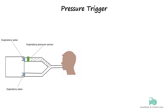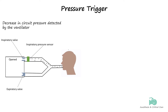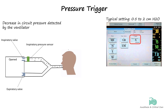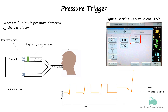Just like flow triggering, pressure triggering describes a method whereby a decrease in circuit pressure is detected by the ventilator pressure sensors and interpreted as patient effort. When the patient inhales against a closed inspiratory valve, it produces a pressure drop, and in response, the ventilator delivers a mechanical breath by opening the inspiratory valve. A typical setting for a pressure trigger is 0.5 to 2 cmH2O. We can also appreciate the reduction in pressure from baseline in the pressure-time waveform shown here.